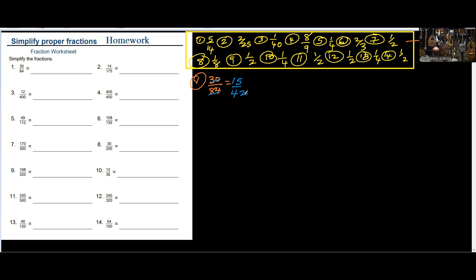Again, we can use 3. 3 can divide 15 and 3 can divide 42. So 3 into 15 gives me 5 and 3 into 42 gives me 14. So the simplified answer is 5 over 14, and this is correct. Now let's go to the second one.